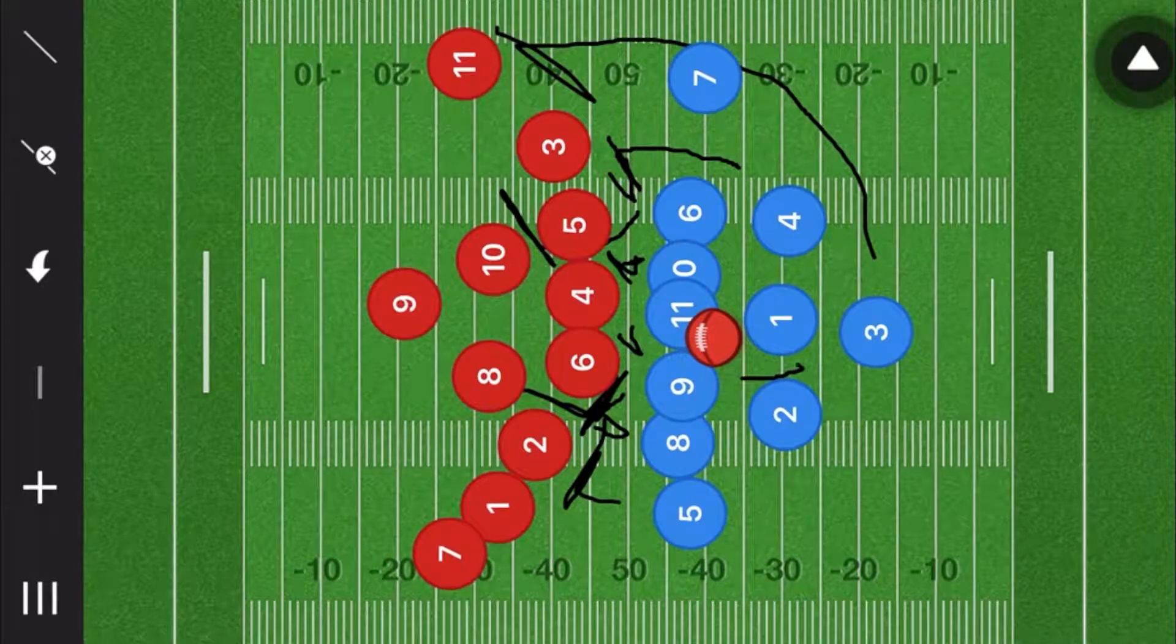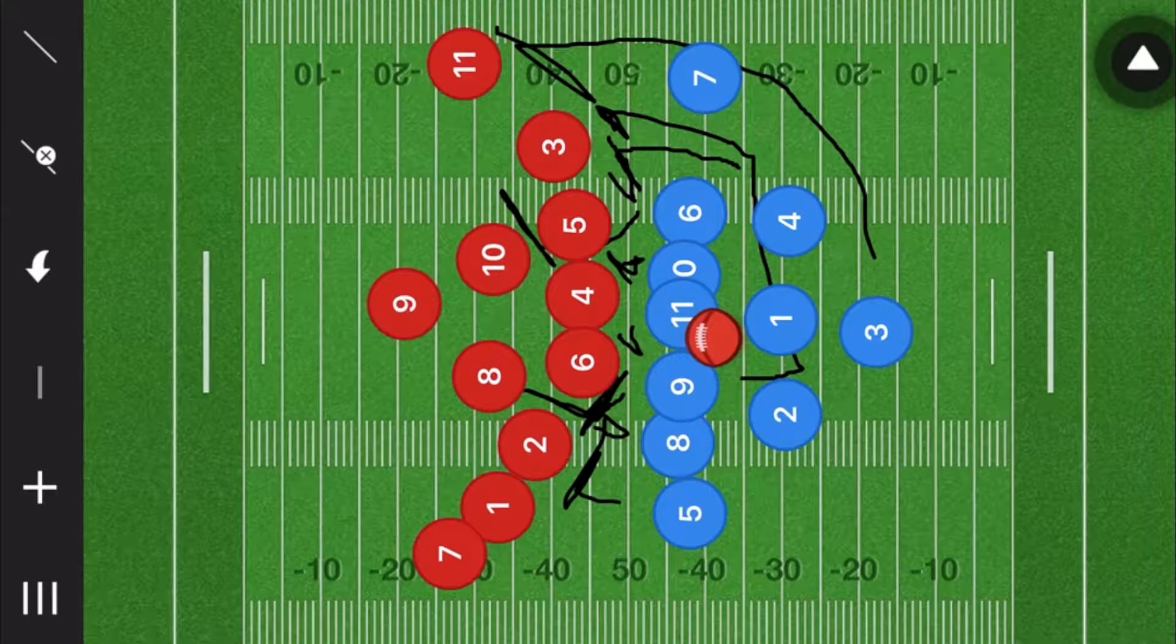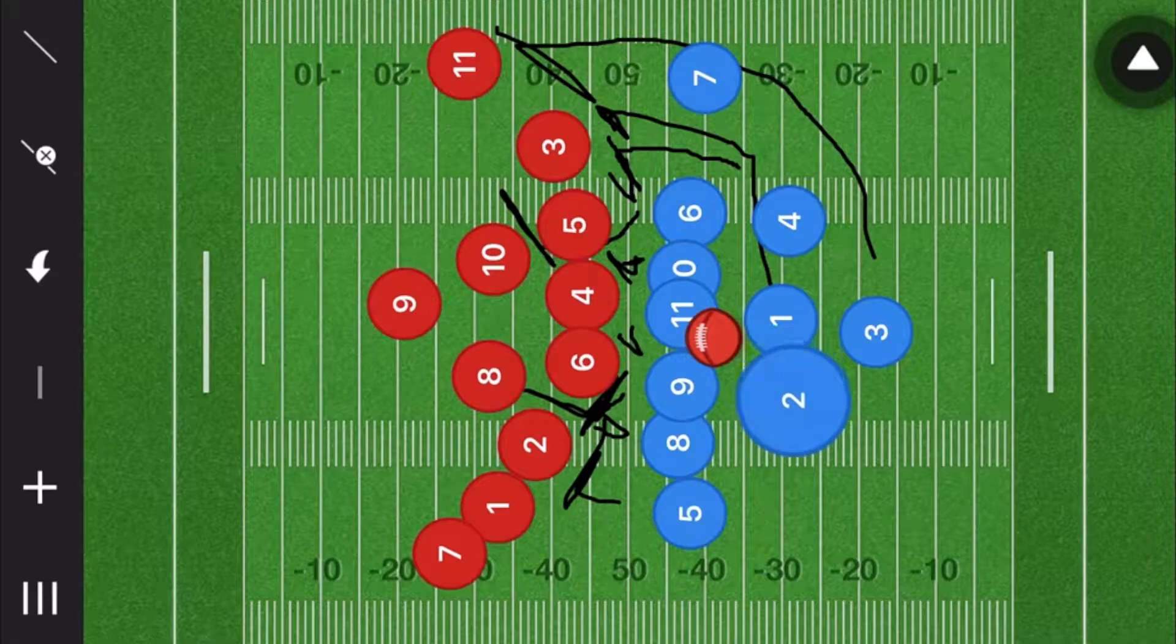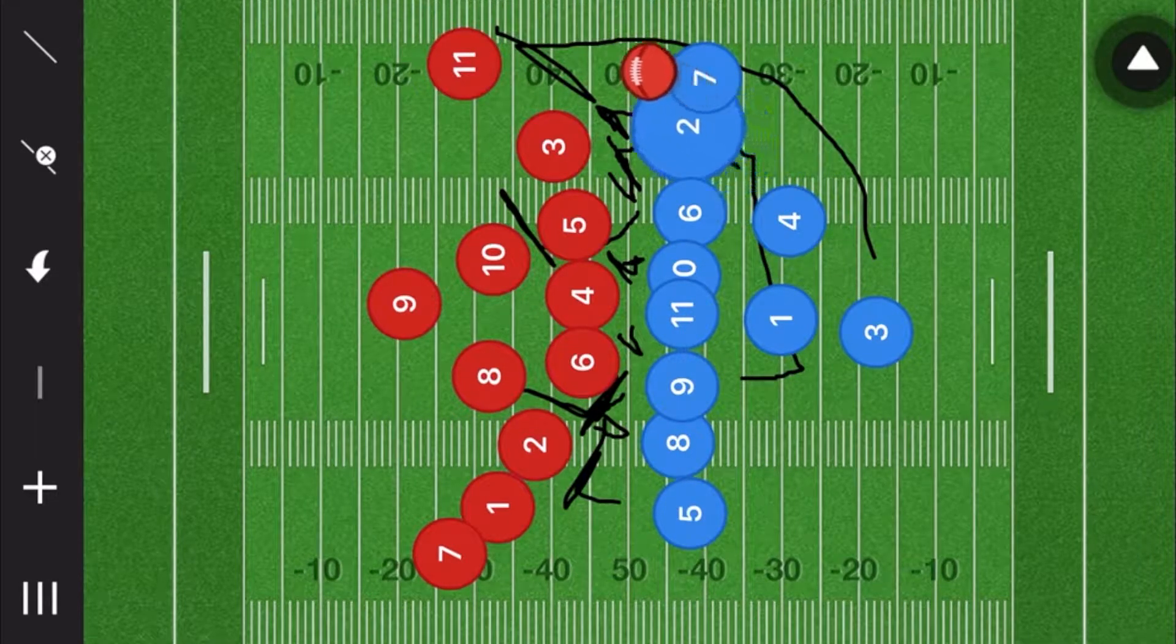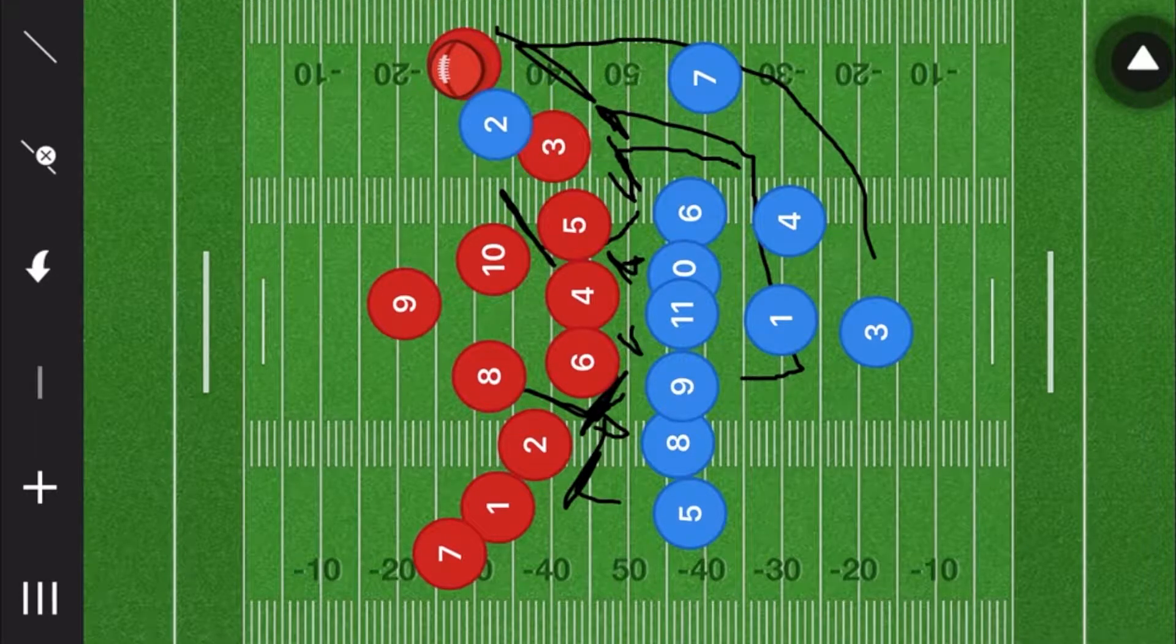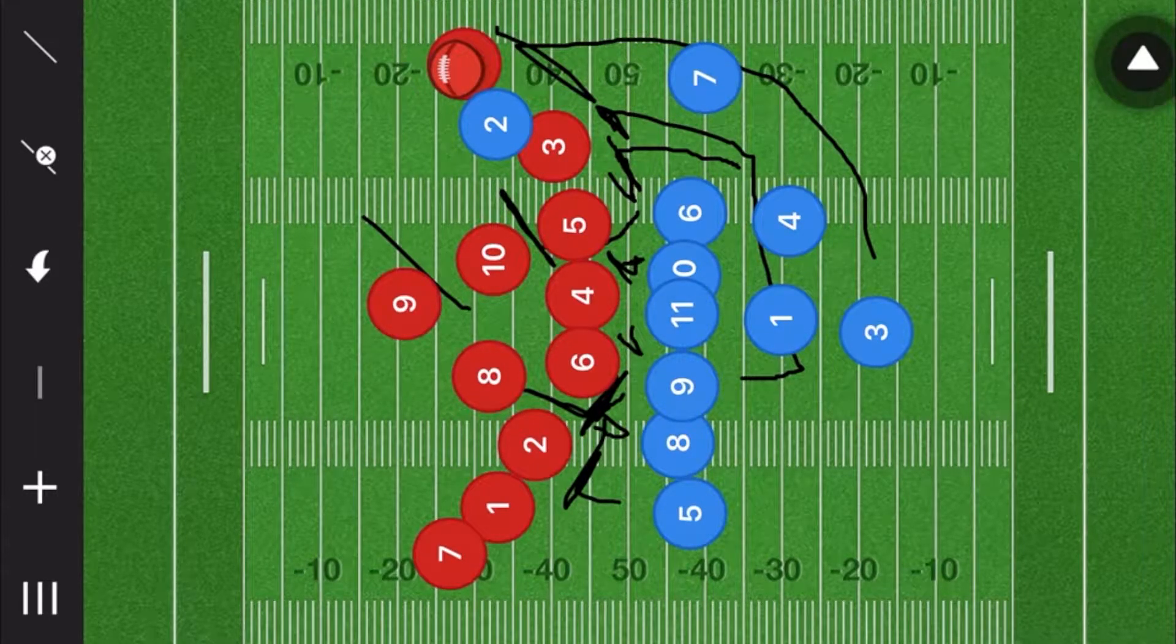He's actually going to be coming back and across, blocking player three. This will leave player two wide open to run the football up that wing and right up this way. If anything, he only has to go one-on-one with player nine.